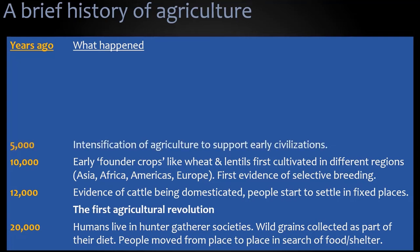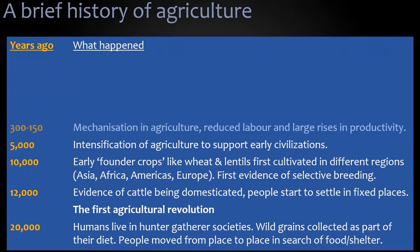5,000 years ago, as early civilizations were created, we saw the intensification of agriculture to support them. Larger populations needed more food, which needed a more intensive and more managed form of agriculture. This existed for thousands of years, but it's only in the last 300 years or so that we started to mechanize agriculture to reduce the amount of labor required, and this led to large rises in productivity.